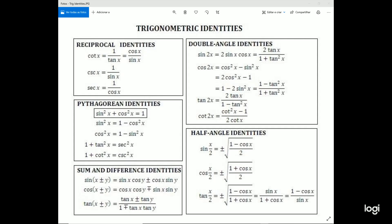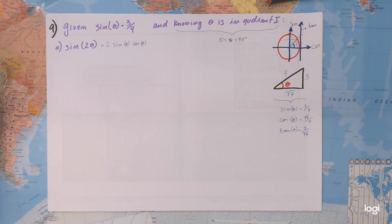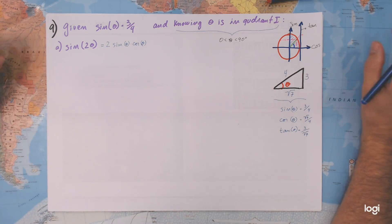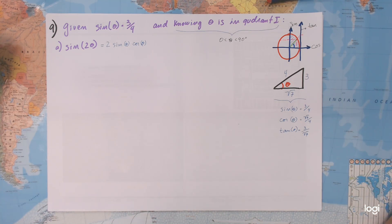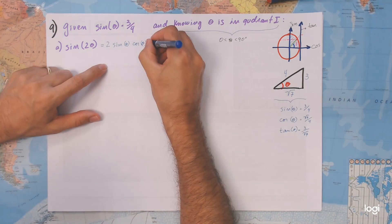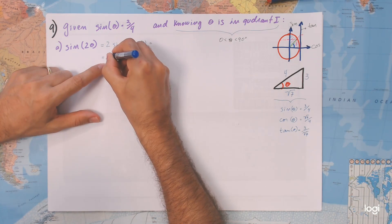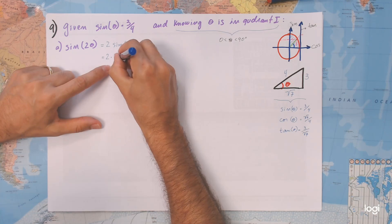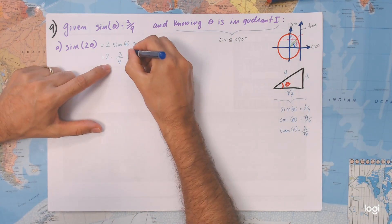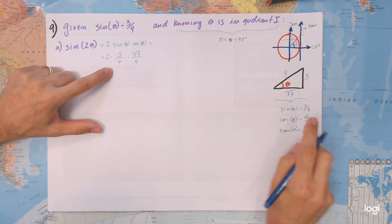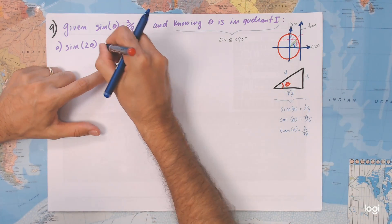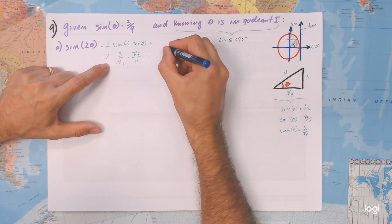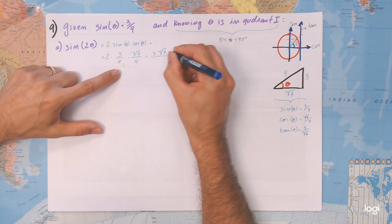Okay, just that. Then we come back and I always try to show the trigonometric identity, so every time we have the chance to see it more and more. Now just plug in the numbers — it's not very difficult: 2 times sine of theta, which is 3 fourths, times cosine of theta, which is square root of 7 divided by 4. The 2 and 4 cancel, so in the end we have 3 square root of 7 divided by 8.